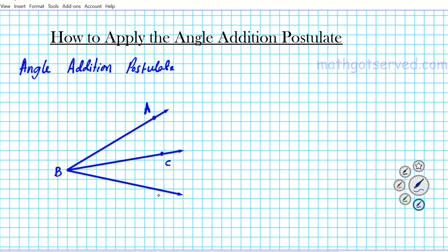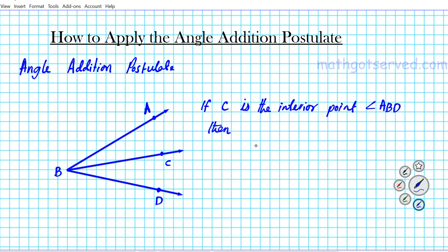And then we have another small angle CBD. The angle addition postulate basically helps us to solve problems involving the combination of these two small angles to form the big angle. Formally, it can be expressed as follows: if C is an interior point of angle ABD,